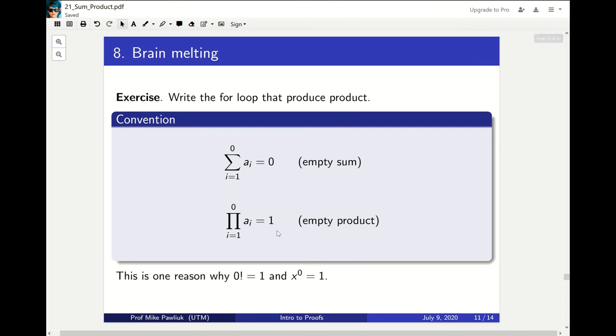When you initialize the product, you initialize it to one and then multiply things onto that. So this is partly why zero factorial is equal to one and partly why x to the zero is equal to one, which I think is a nice observation.